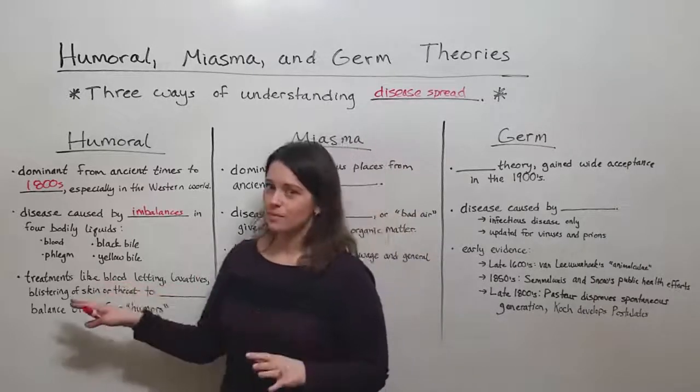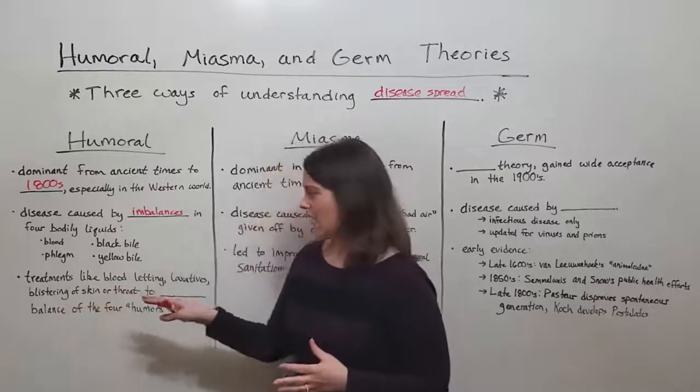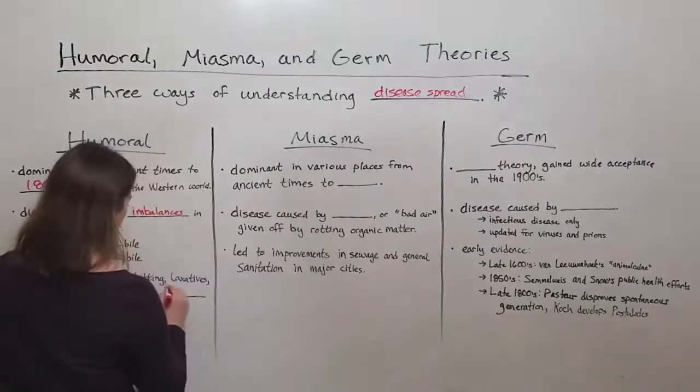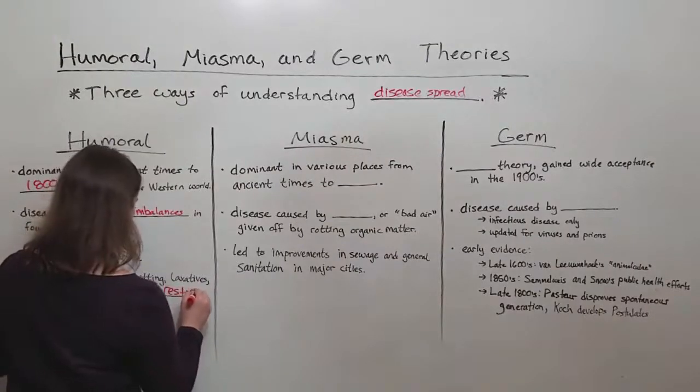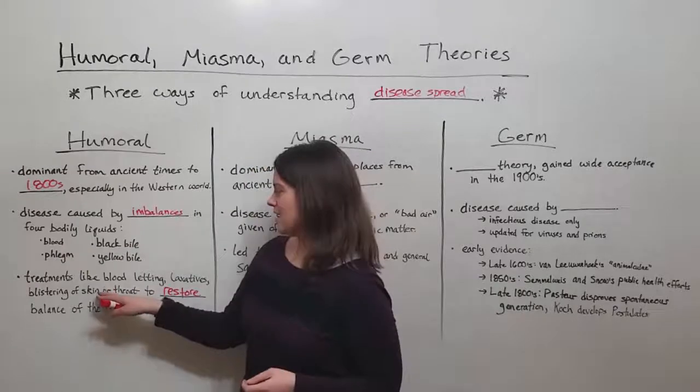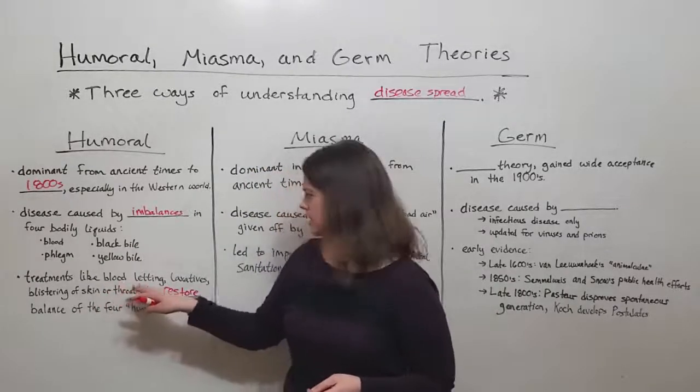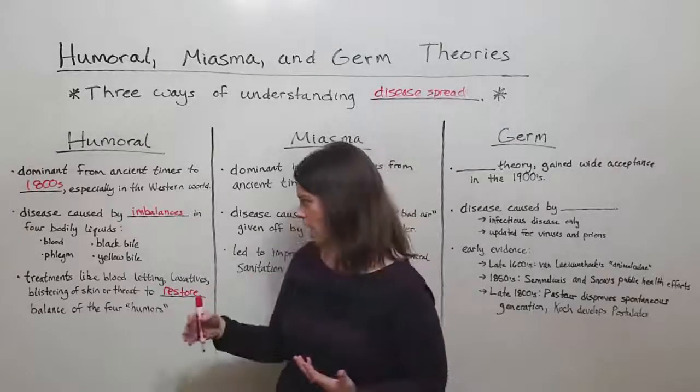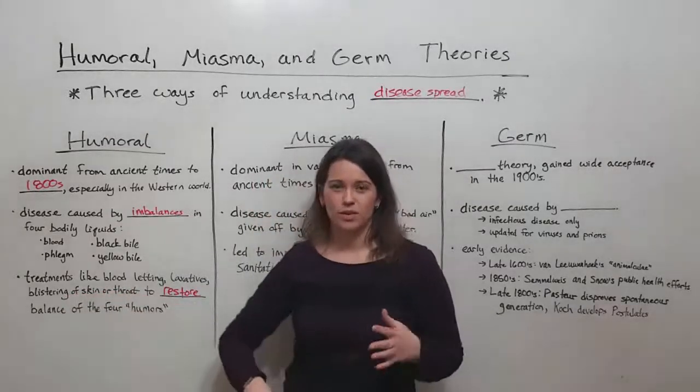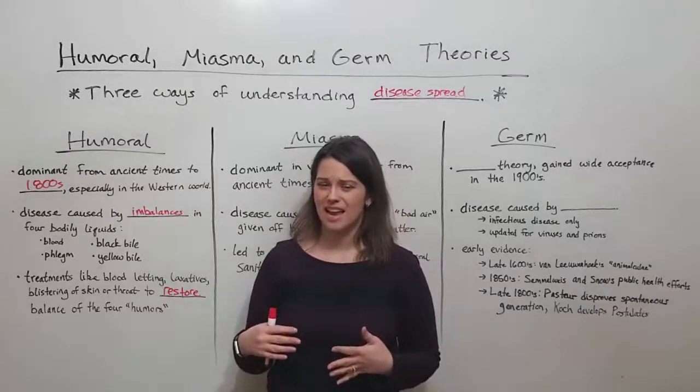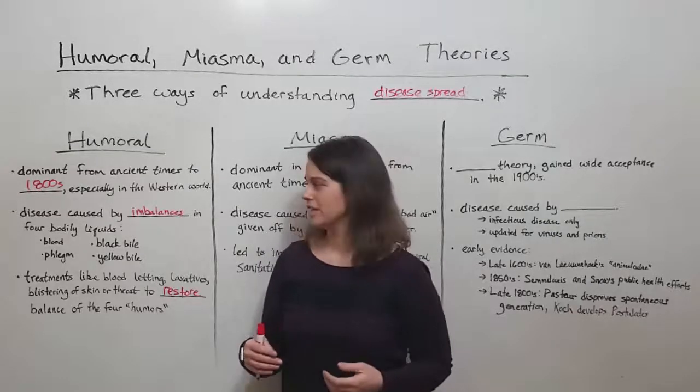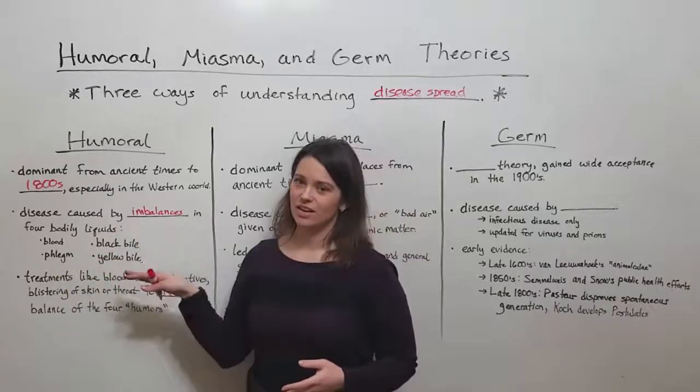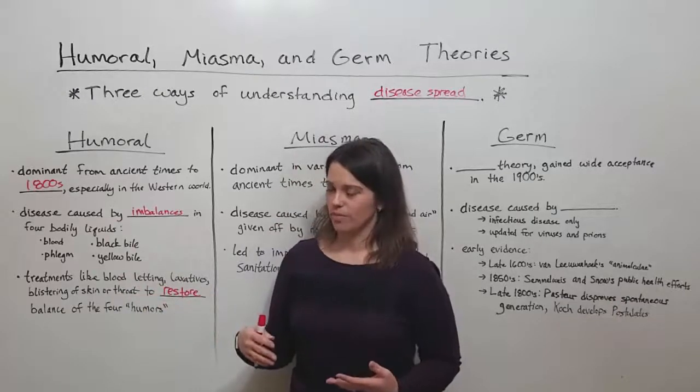And so there were treatments that were aimed at restoring the balance of these four humors: treatments like bloodletting with leeches, the use of laxatives, also emetics to make someone vomit, blistering of the skin or the throat, things that we know today are usually not helpful in treating disease. They were just trying to restore the balance here and unfortunately often did really more harm than good.